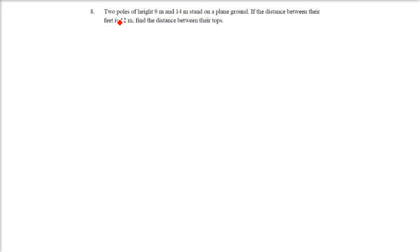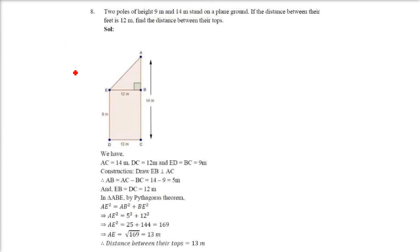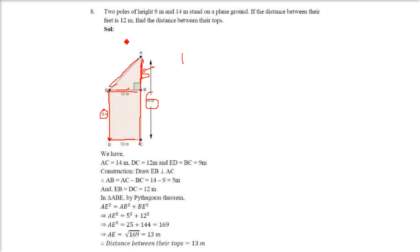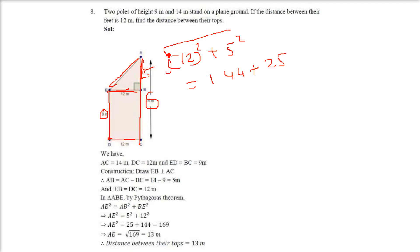Two poles of height 9 meters and 14 meters stand on plain ground. If the distance between their feet is 12 meters, find the distance between their tops. This is 9 meters and 14 meters tall; the distance between the poles is 12 meters, so by construction this base is also 12 meters. The height difference is 14 minus 9, which is 5 meters. So the triangle has legs 12 and 5. 12 square plus 5 square is 144 plus 25 equals 169. The square root is 13 meters. So the distance AE between their tops is 13 meters.